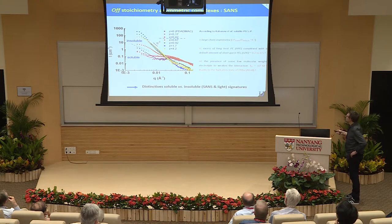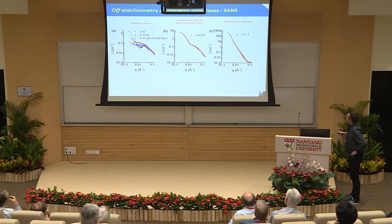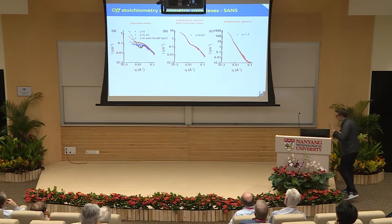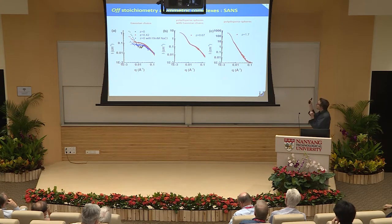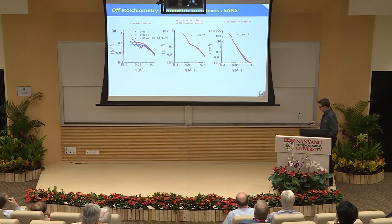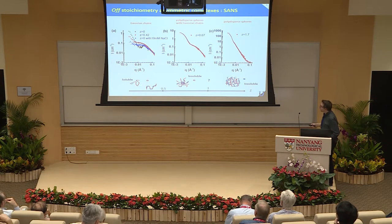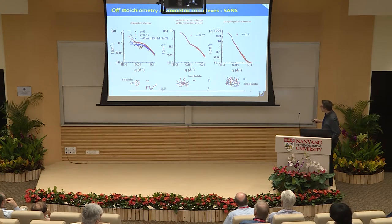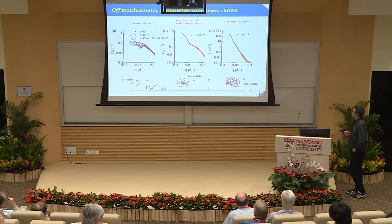If we fit the data throughout different charge ratio values, at Z equal to or less than 1, we have a Gaussian chain; we then go through a polydisperse sphere with Gaussian chain — the Gaussian chain coming from the large PDMAC polyelectrolyte chains. If we keep increasing Z, we get polydisperse spheres. So the progression is: soluble chains, then insoluble ones with Gaussian chains hanging around, and more spherical objects above stoichiometry.